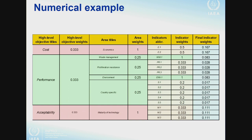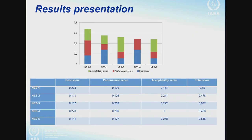Here you see the result representation for five nuclear energy systems. You see the ranking — the best alternative is nuclear energy system number 3, while the fourth and second are more or less in last place and practically indistinguishable. You can also see the contribution of acceptability, performance, and cost to each score, which is useful for interpreting results. For example, you can see there is no contribution from acceptability to the fourth alternative — that is a field for discussion and consideration.